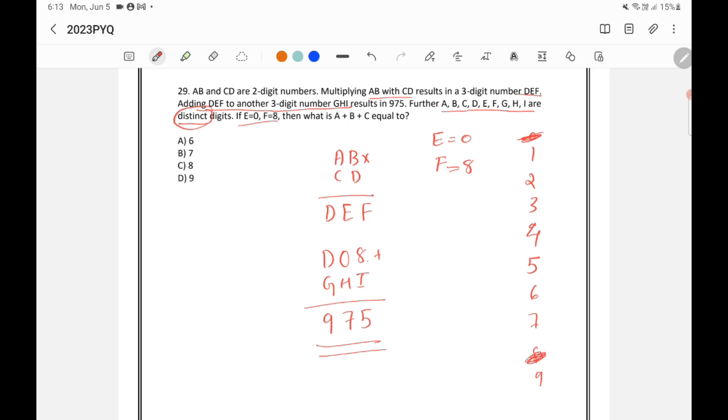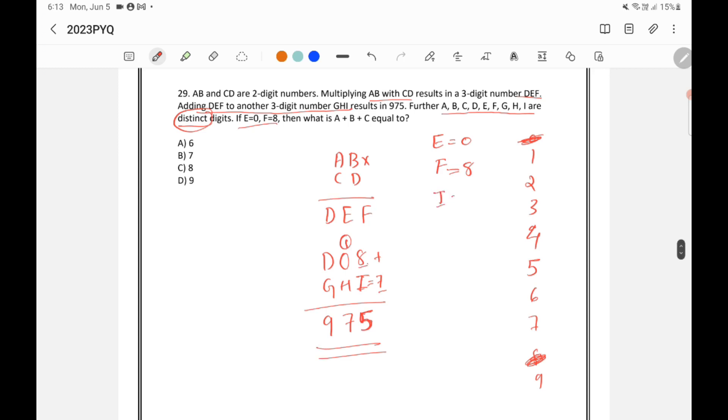Now if you see here I has to be 7, then only 8 plus 7 will become 15. So 5 I can write here and 1 I can write here. So only possibility for I is 7. So cancel out 7 also because we have already used 7.